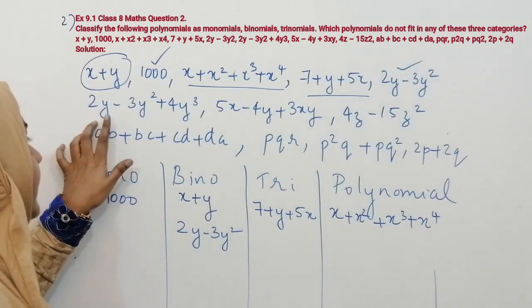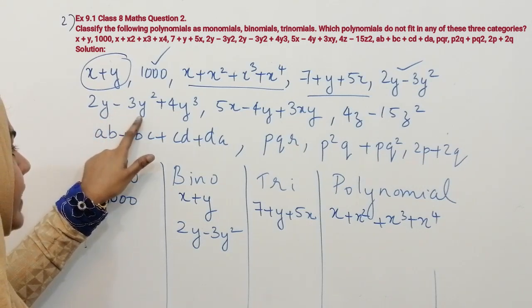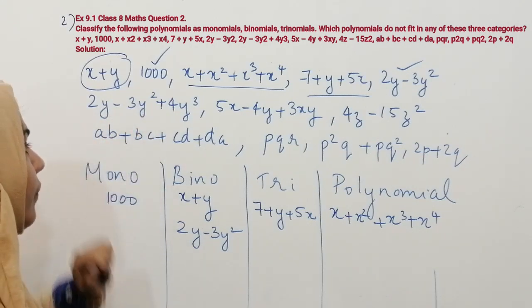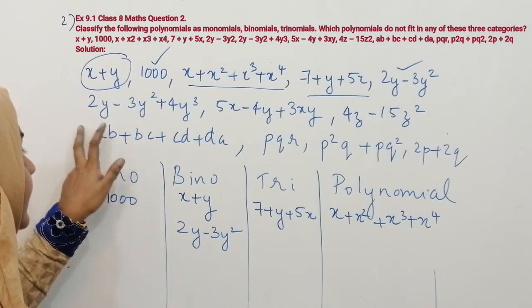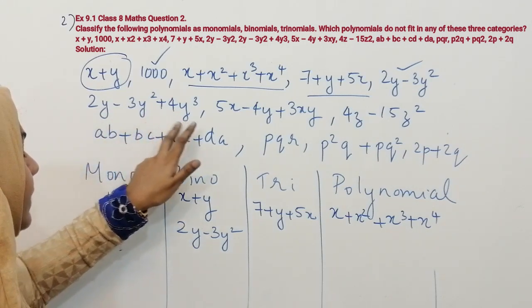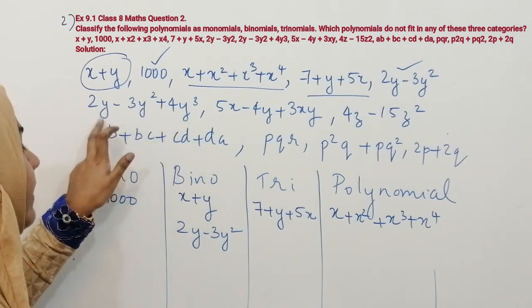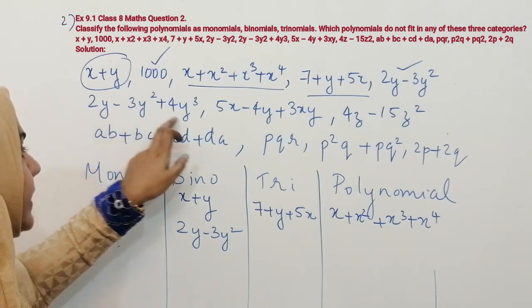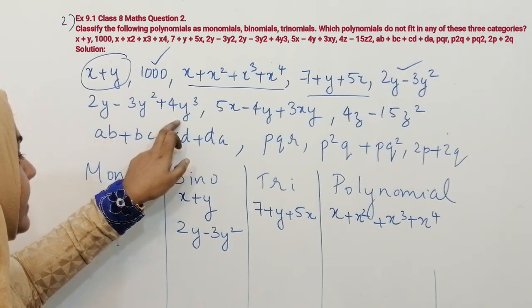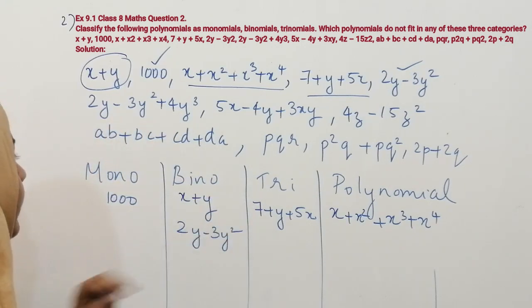The next one is 2y minus 3y squared plus 4y cubed. This algebraic expression contains three terms, so it is a trinomial.